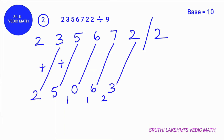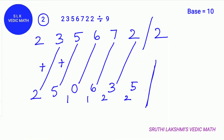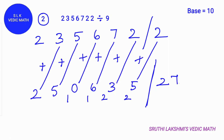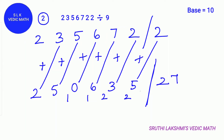Next we do 23 plus 2. 23 plus 2 is 25. The remainder can't be bigger than the divisor 9. We write down the 5 and carry the 2. Next place a remainder stroke. Next we do 25 plus 2. 25 plus 2 is 27. The remainder can't be bigger than the divisor 9, so we figure out how many 9's can fit in 27. 3 nines can fit in 27, so we add 3 to the quotient.